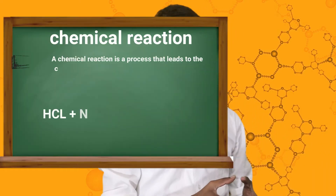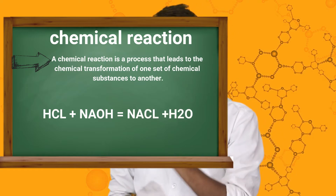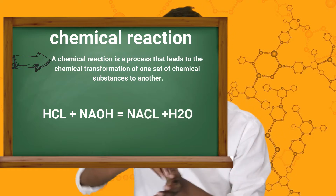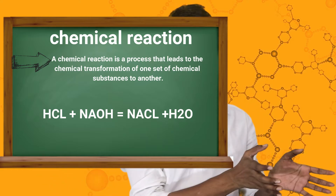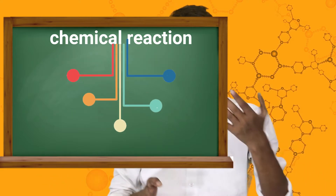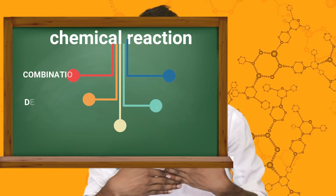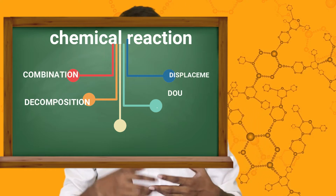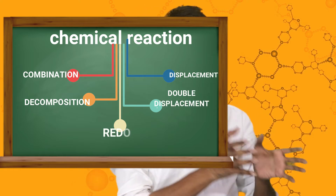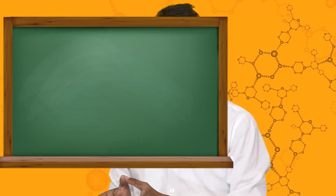Now let's move on to chemical reactions. A chemical reaction means when two chemicals or elements react together, they create new products. There are five types of chemical reactions: first, combination; second, decomposition; third, displacement; fourth, double displacement; and fifth, redox chemical reaction.